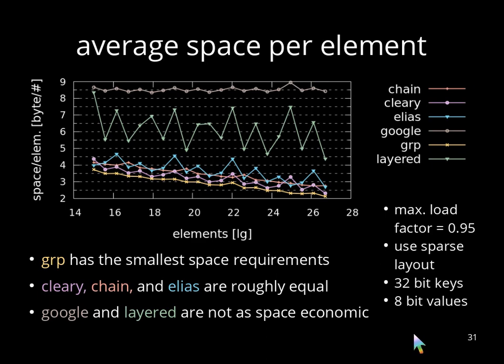For the experiments, we took again keys and values from a random source, and this time we used 8-bit values. For the other approaches, we set the maximum load factor to 0.95, and we use a sparse layout where applicable. In this plot, we show the average space per element, and you can see in the yellow line, which is for group, that group has the smallest space requirements. We can also see that Cleary, chain, and Elias behave roughly equal, and Google and layered are not space economic.